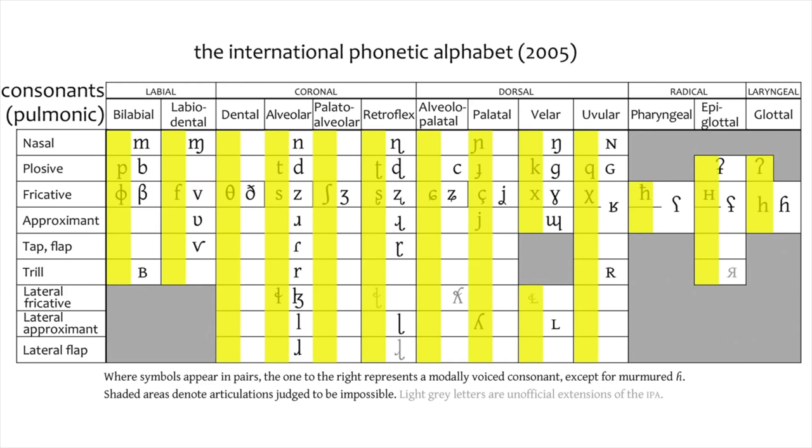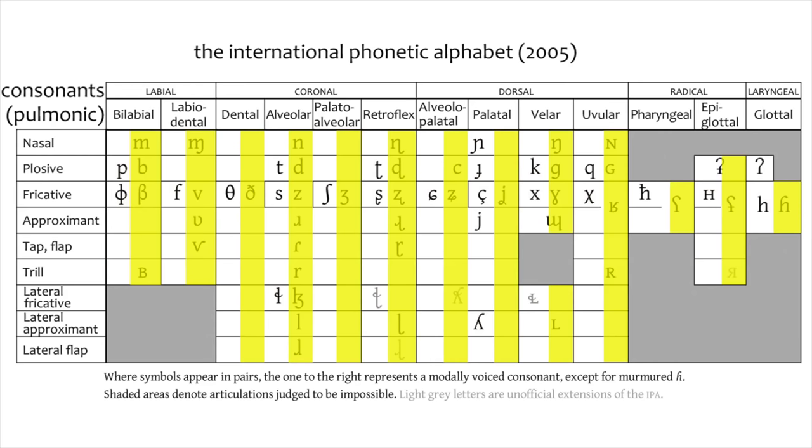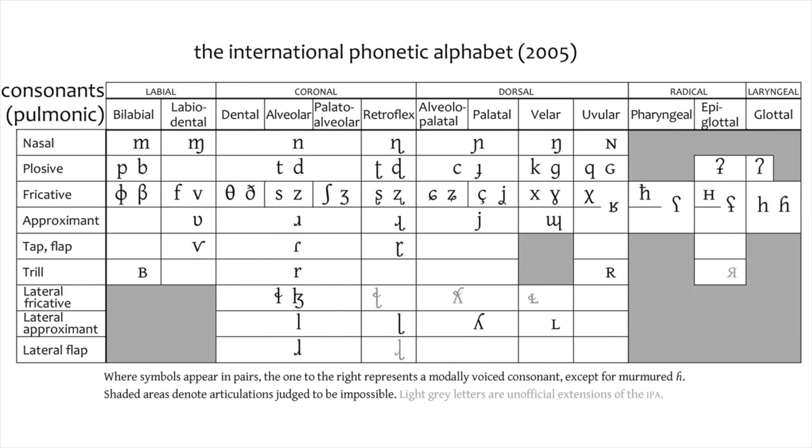Any symbol on the left would be voiceless, and those on the right are voiced. This left-right convention holds even if there is only one symbol in a cell, like in the nasals, for example.